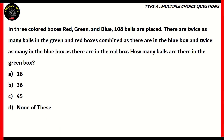Next: in three colored boxes — red, green, and blue — 108 balls are placed. There are twice as many balls in the green and red boxes combined as there are in the blue box, and twice as many in the blue box as there are in the red box. How many balls are there in the green box? A - 18, B - 36, C - 45, or D - none of these.